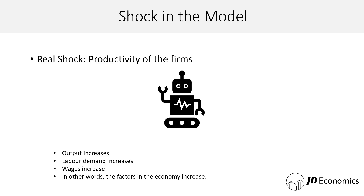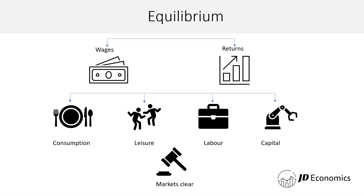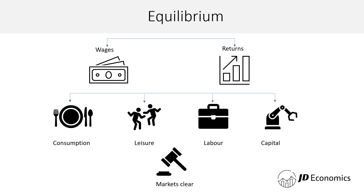If productivity increases, output will expand; if productivity decreases, output will decrease. Finding an equilibrium means finding a set of variables — consumption, leisure, labor, capital — and a set of prices — wages and returns — that make families decide optimally and firms decide optimally, so that markets clear. As a summary: we have an economy with two agents, there's going to be a productivity shock impacting the different variables, and after this shock, a new set of prices determines the equilibrium and makes markets clear.